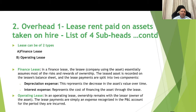Leases can be of two types. One is the finance lease, in which the lessee company using the asset essentially assumes most of the risk and rewards of ownership. The leased asset is recorded on the lessee's balance sheet and lease payments are split into two components: the depreciation component and the interest component. The second type is the operating lease, where ownership remains with the lessor. Lease payments are simply an expense recognized in the P&L account for the period they are incurred.